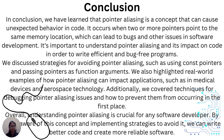In conclusion, we have learned that pointer aliasing is a concept that can cause unexpected behavior in code. It occurs when two or more pointers point to the same memory location, which can lead to bugs and other issues in software development. It's important to understand pointer aliasing and its impact on code in order to write efficient and bug-free programs. We have discussed strategies for avoiding pointer aliasing such as const pointers and passing pointers as function arguments. We have also highlighted real-world examples of how pointer aliasing can impact applications such as medical devices and aerospace technology. Additionally, we have covered techniques for debugging pointer aliasing issues and how to prevent them from occurring in the first place.